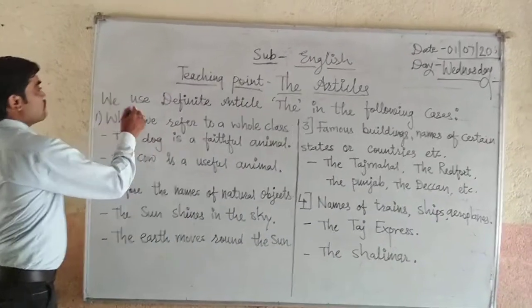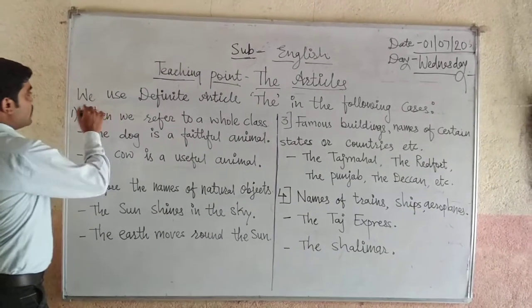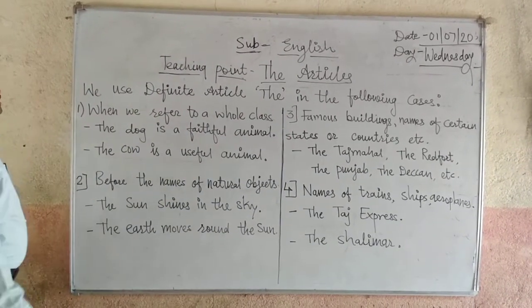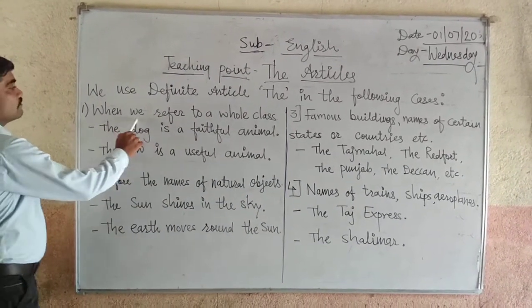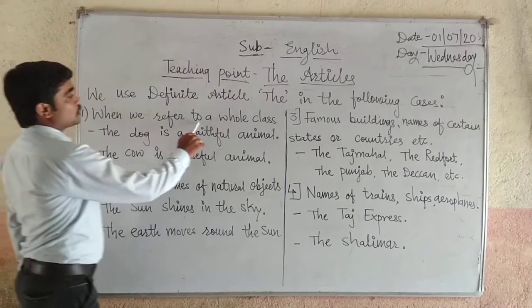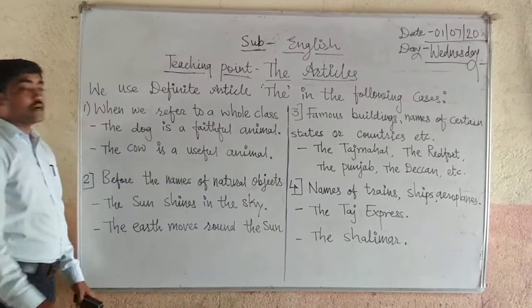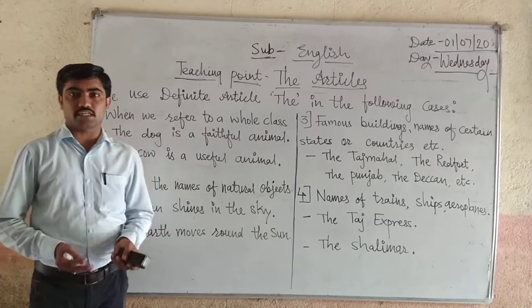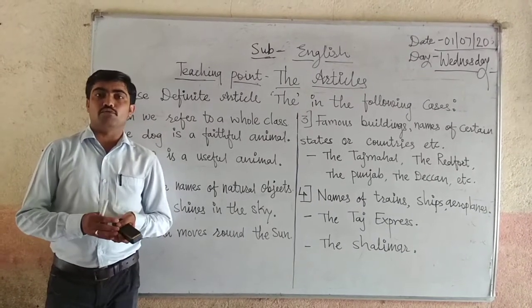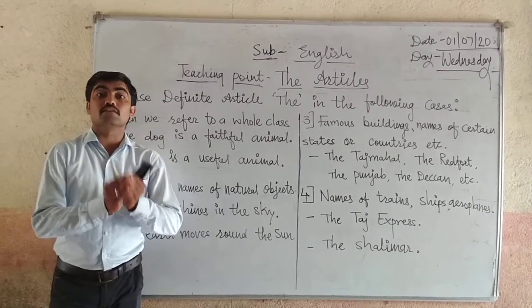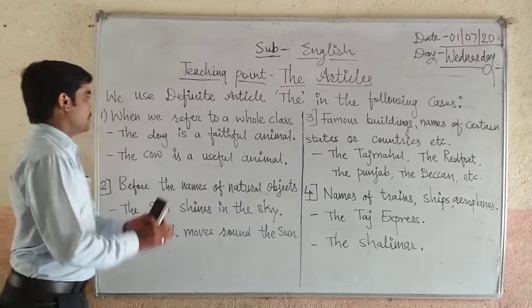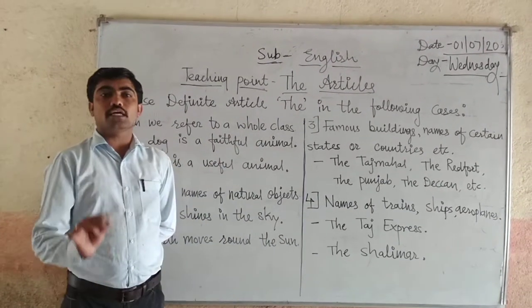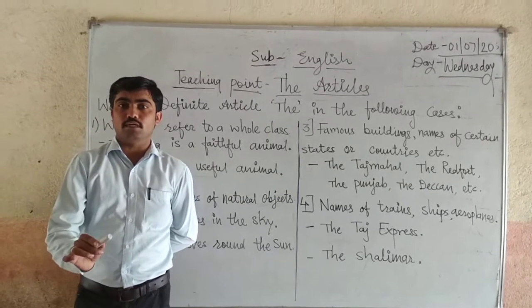Now, when do we use different articles? The first case is when we refer to a whole class or a whole group — that time we have to use the article The. For example: The dog is a faithful animal.